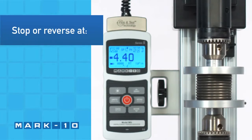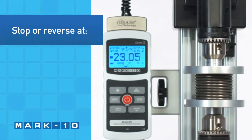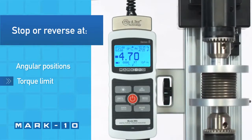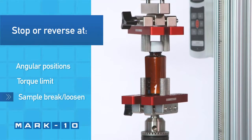The test stand can be configured to automatically reverse or cycle between angular positions when reaching a torque or when the sample has broken or loosened.